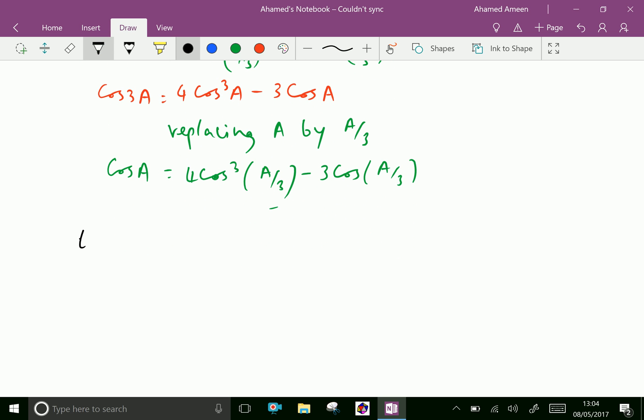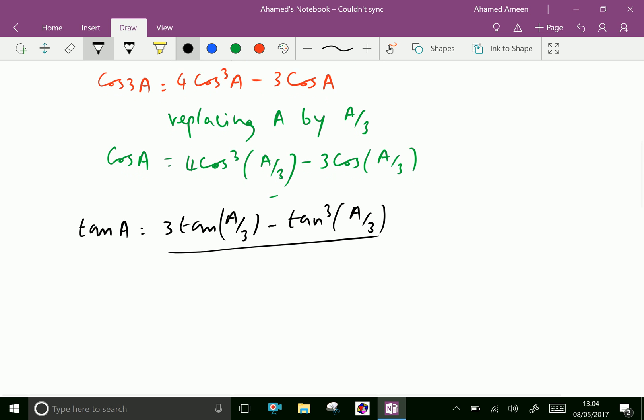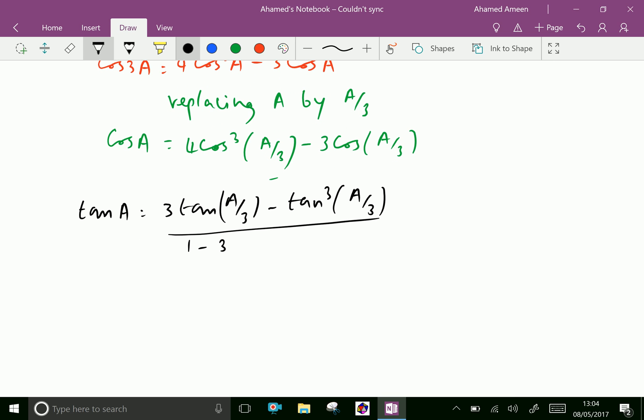Similarly, for tan A equals 3 tan(A/3) minus tan³(A/3) over 1 minus 3 tan²(A/3).